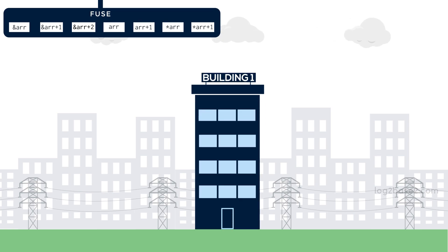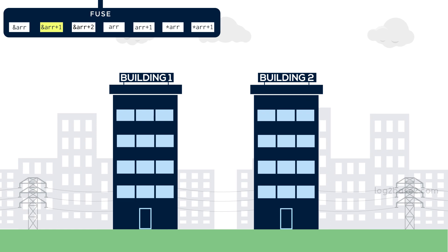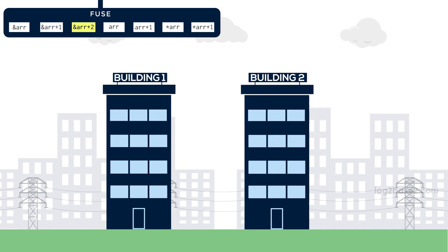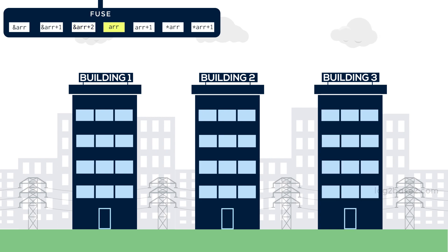Let us connect this with a real-time example. If we assume a building as a 2D array with 4 floors and 3 houses on each floor, then &ARR will point to the entire apartment, i.e. building 1. &ARR + 1 will point to the next apartment, building 2, which also has 4 floors and 3 houses per floor. &ARR + 2 will point to building 3. ARR will point to the first floor of building 1, and ARR + 1 will point to the next floor. *ARR will point to the first house on the first floor, and *ARR + 1 will point to the next house. So in a 2D array ARR, it can point to the whole 2D array, a single row, and a single element.